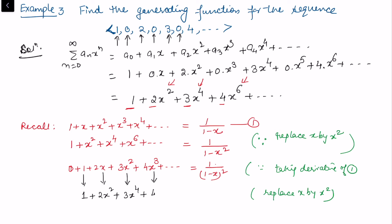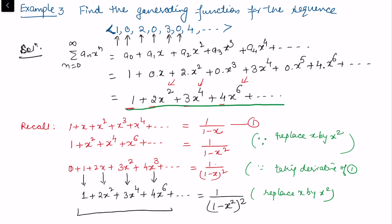On the right side, 1/(1 - x)² becomes 1/(1 - x²)² after replacing x by x². We can see this matches our desired sequence, so the generating function for the sequence 1, 0, 2, 0, 3, 0, 4, ...